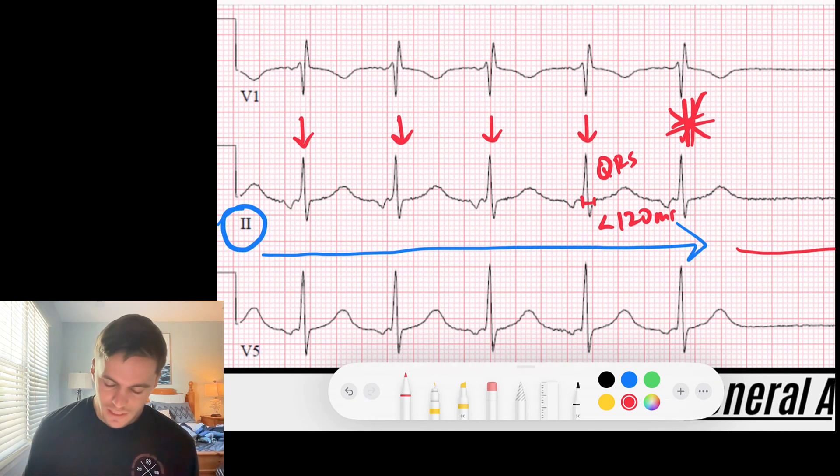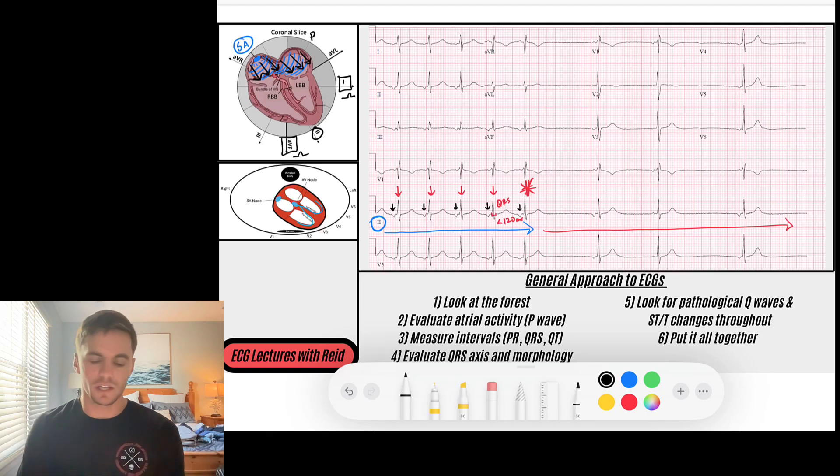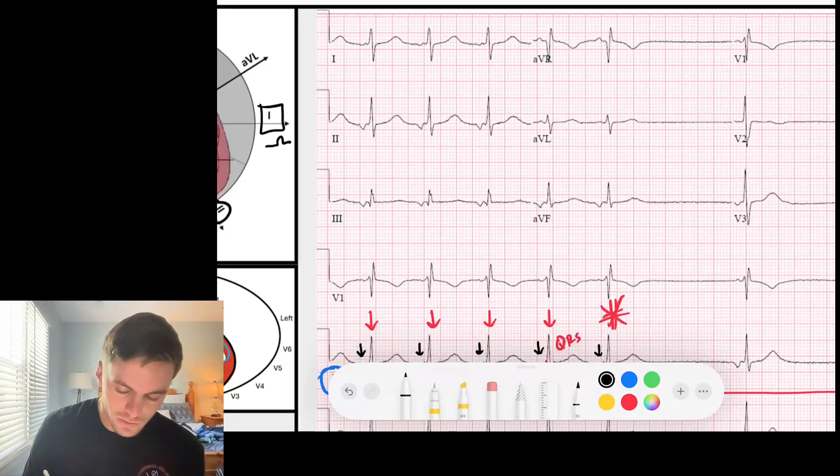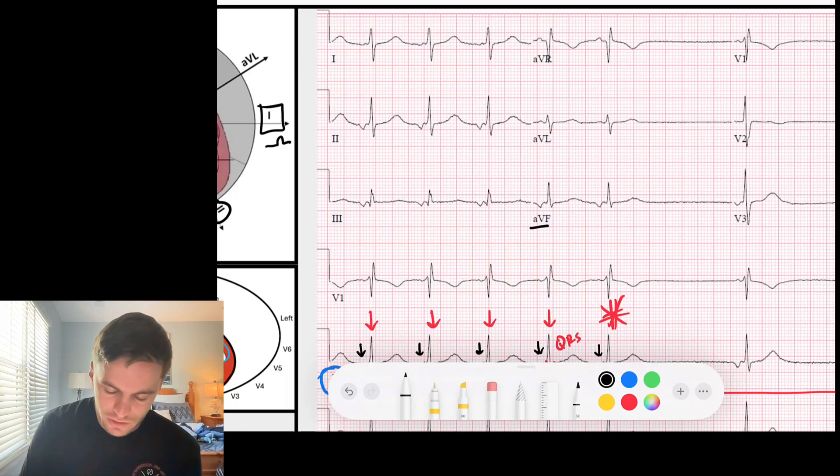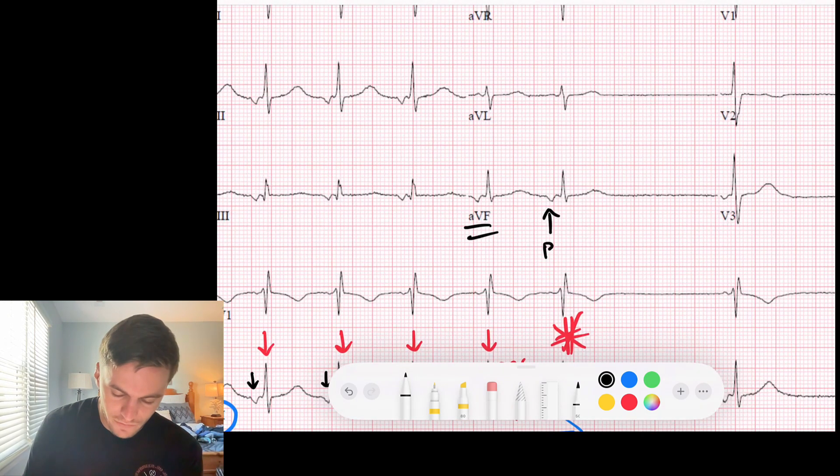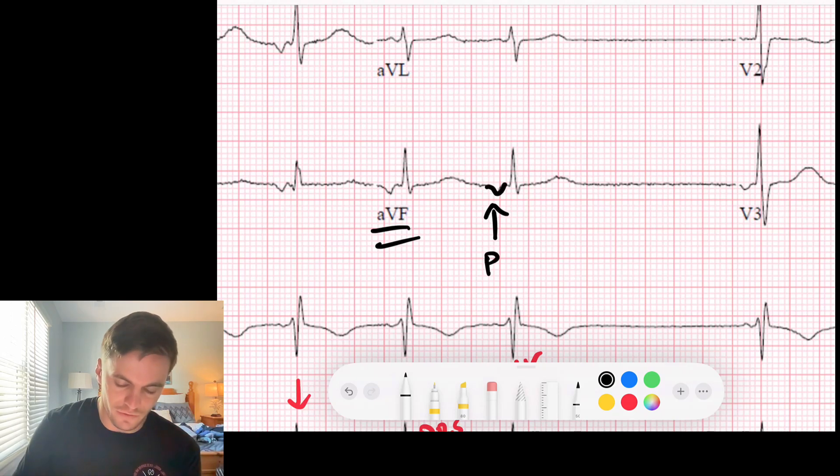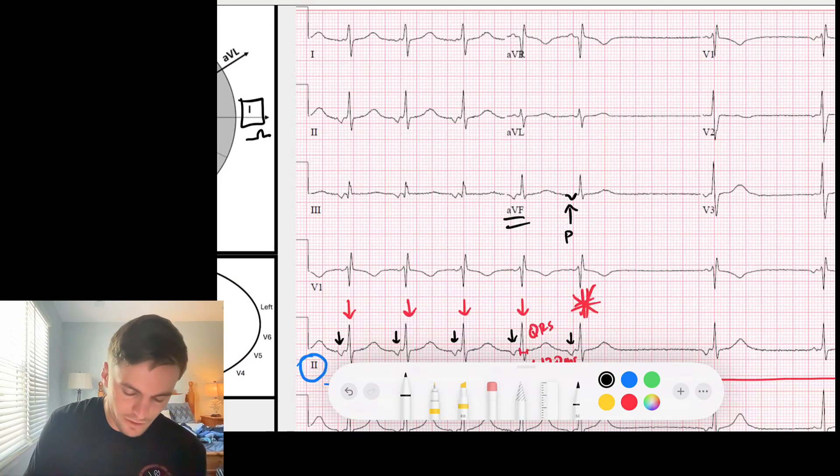I notice that before there's a nice narrow complex rhythm—these QRS complexes are narrow, meaning that the duration of the QRS is less than 120 milliseconds, less than three small boxes. That tells me that this QRS is being generated from at least the AV node down, because it's rapidly conducting through those His-Purkinje fibers. And so now I'm like, well what's driving this rhythm? And I see I've got these nice P waves that I'm noting in black right here.